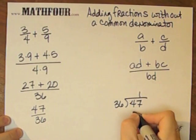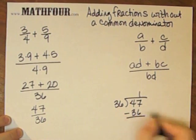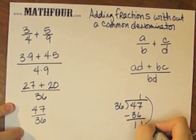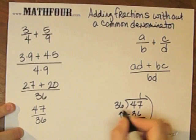36 goes into 47 once, and we have 1, so it's 1 and 11/36.